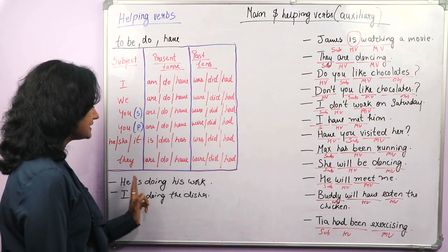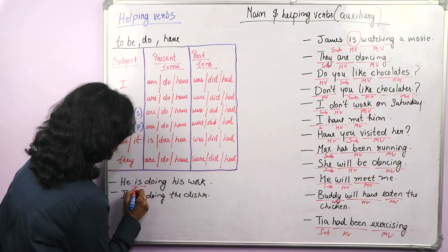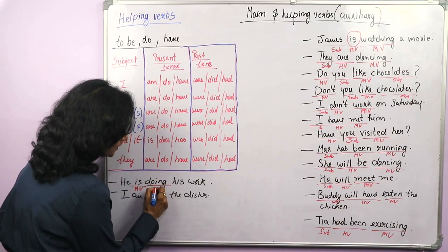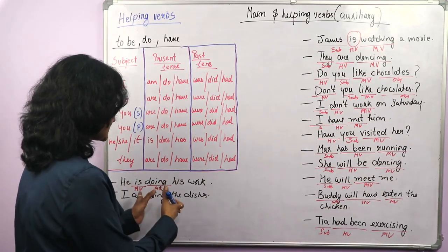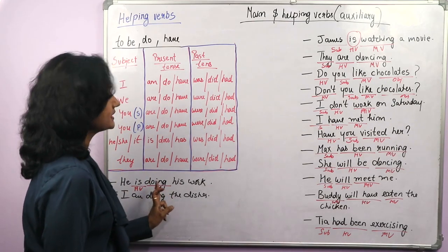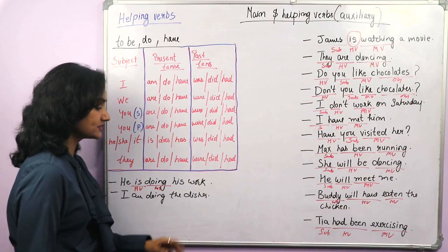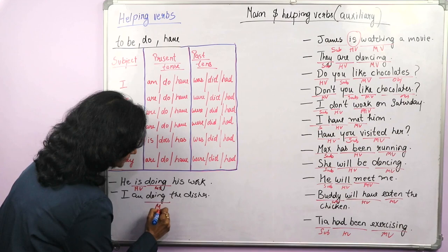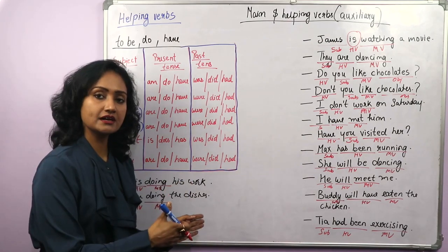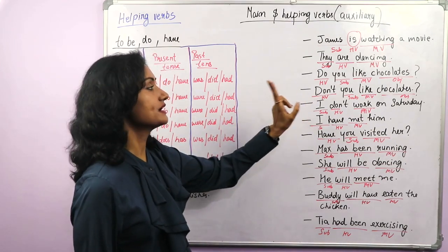Now, do and have — how they can be used as a main verb. 'He is doing his work' — here the helping verb is is, and the main verb is doing. Because this is present continuous: subject plus is/am/are plus first form of the main verb. So here do is not a helping verb; it is a main verb. 'I am doing the dishes' — the main verb is do and the helping verb is am.